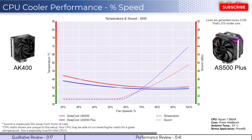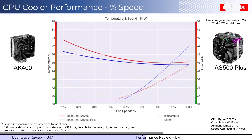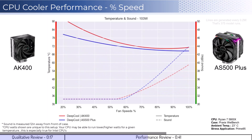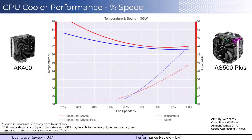As we increase the watts to 105, which is what the CPU is rated for, we can see the AS500 Plus cooler has materially better cooling performance at lower RPMs. However, this benefit diminishes as the fans increase to 100% fan speed. Additionally, when considering sound, the AS500 Plus is noticeably louder at higher RPMs, with the temperature benefit being minimal.